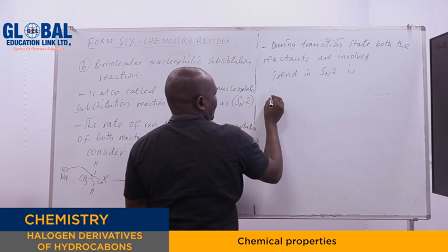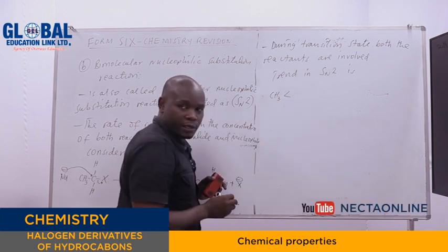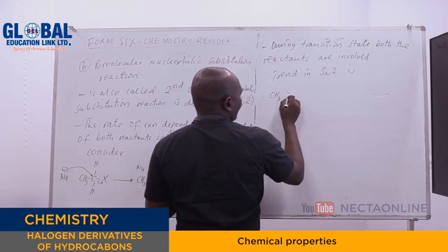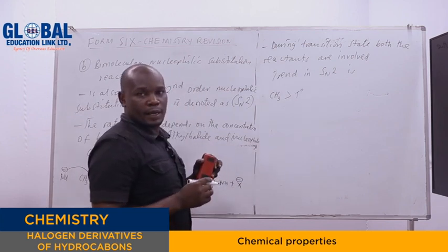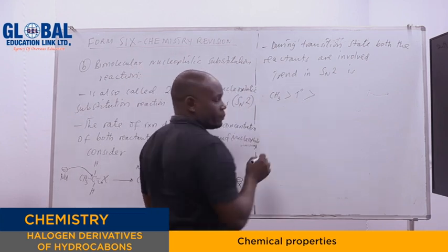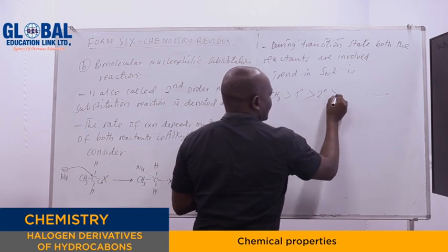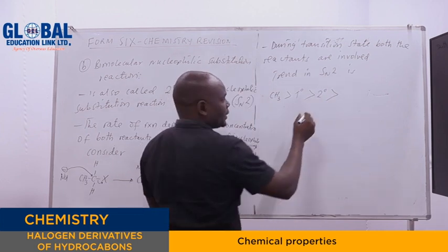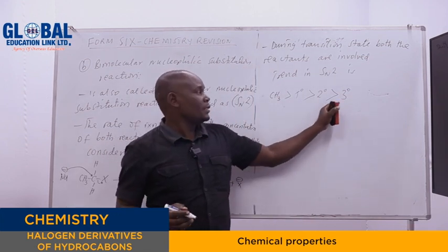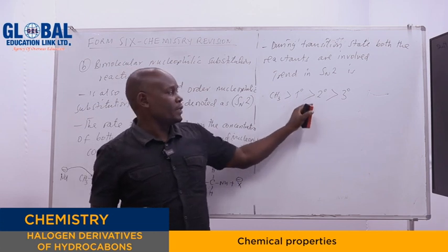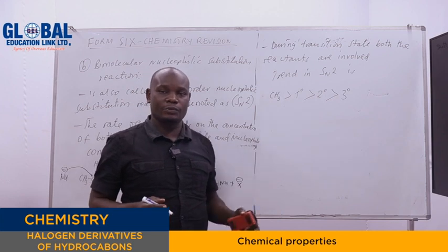The order of reactivity in SN2 is: methyl alkyl group is greater than primary alkyl halides. Primary alkyl halides is also more reactive than secondary alkyl halides, and secondary alkyl halides is more reactive than tertiary alkyl halides. That is the order of reactivity series in the second order nucleophilic substitution reaction.